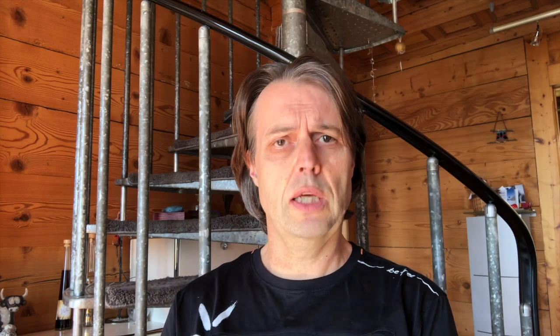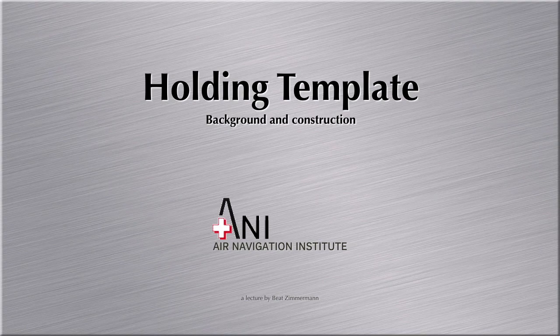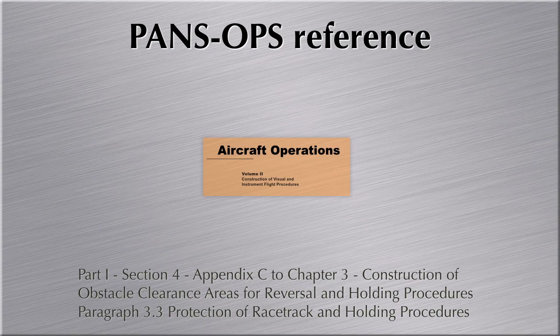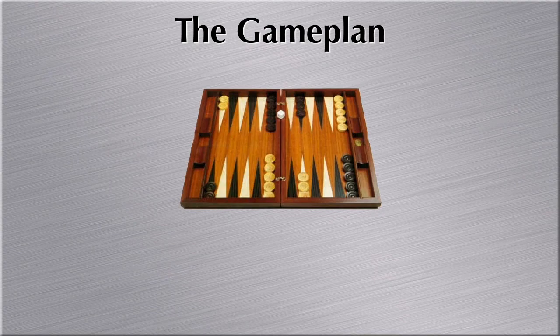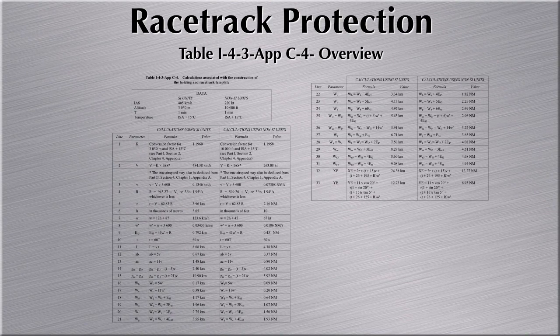I want to start drawing the holding racetrack template, and this part is about the flight technical tolerances and the associated calculations. Let's open PANS OPS part 1 section 4 appendix Charlie to chapter 3, construction of obstacle clearance areas for reversal and holding procedures. We go to paragraph 3.3, protection of racetrack and holding procedures. I will take you step by step through the necessary calculations. This is an overview of table 143 APP C4 that shows all the necessary calculations you will have to do to finally draw a racetrack or holding template.